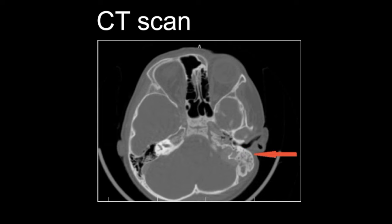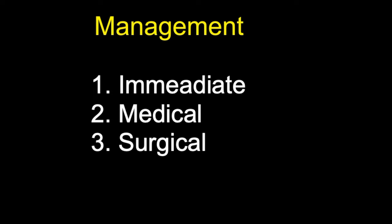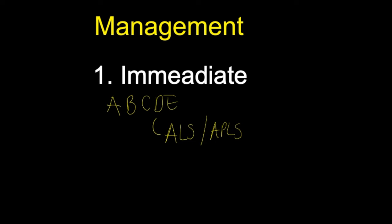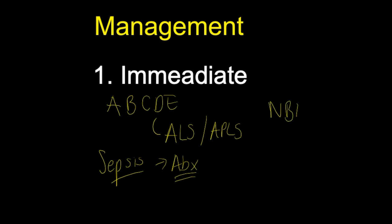For treatment, it's helpful to structure management into immediate, medical, and surgical categories. For immediate management, resuscitate the acutely unwell patient using the ABCDE approach — airway, breathing, circulation, disability, and everything else — as per ALS or APLS guidelines. Then think about the Sepsis 6, including giving appropriate antibiotics early as per local guidelines. Keep the patient nil by mouth in case they need to go to theatre for an operation.